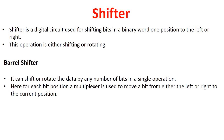For each bit position, a multiplexer is used to move a bit from either the left or right to the current position. That means in order to shift or rotate the data bits, we are using a multiplexer combinational circuit. A multiplexer is basically a combinational circuit that has multiple inputs and a single output line. So we can use a multiplexer to design a barrel shifter circuit.